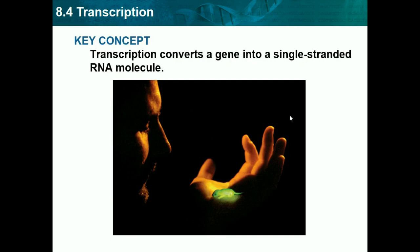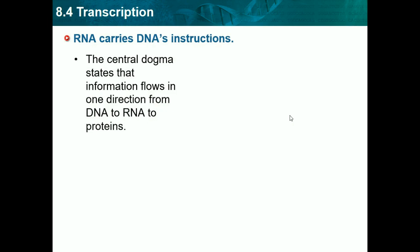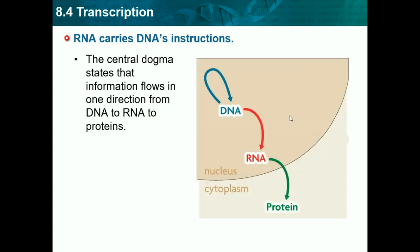Now we'll do lesson 8.4, which is transcription — the second step in the way DNA transforms to proteins. Transcription converts a gene into a single-strand RNA molecule. RNA is similar to DNA, but we'll learn the differences. RNA carries DNA's instructions. The central dogma states that information flows in one direction: from DNA to RNA to proteins. RNA is the link between DNA and proteins.